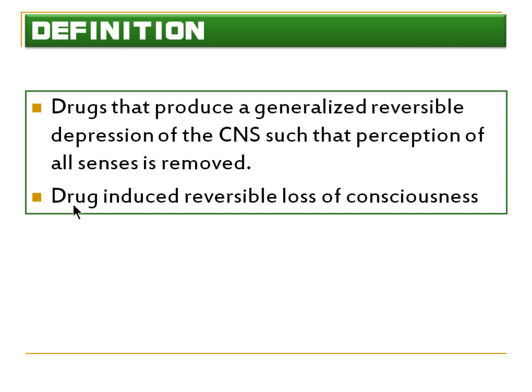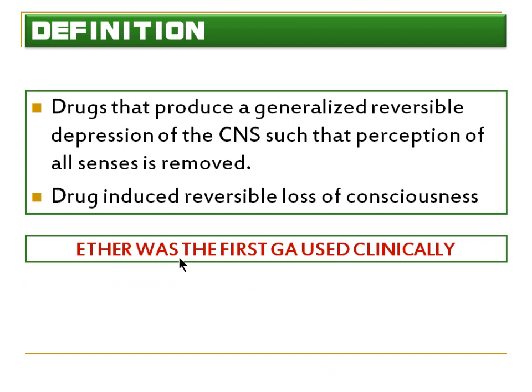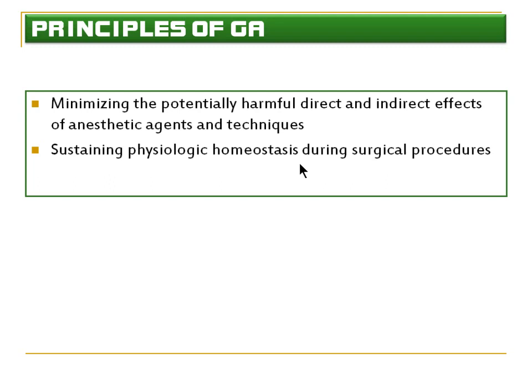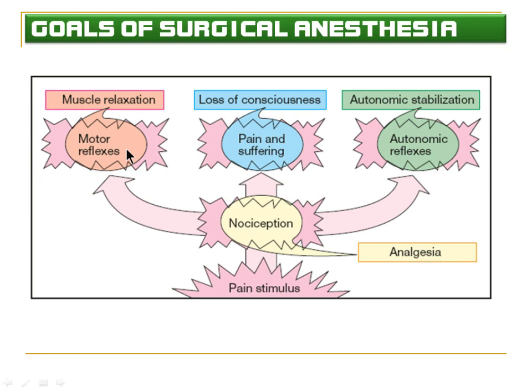Being anaesthetized is the drug-induced reversible loss of consciousness. Ether was the first general anaesthetic used clinically. The principles of general anaesthesia include: minimizing the potentially harmful direct and indirect effects of anaesthetic agents and techniques; sustaining physiological homeostasis during surgical procedures; and improving post-operative outcomes. The goal of surgical anaesthesia is to remove pain perception by inducing loss of consciousness, thereby reducing pain and suffering.